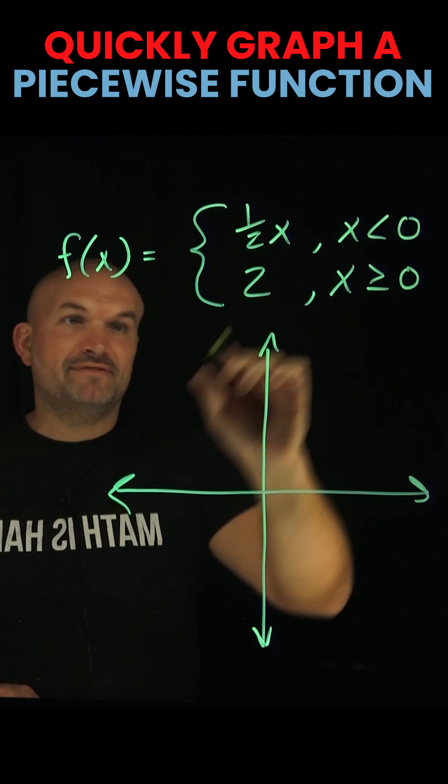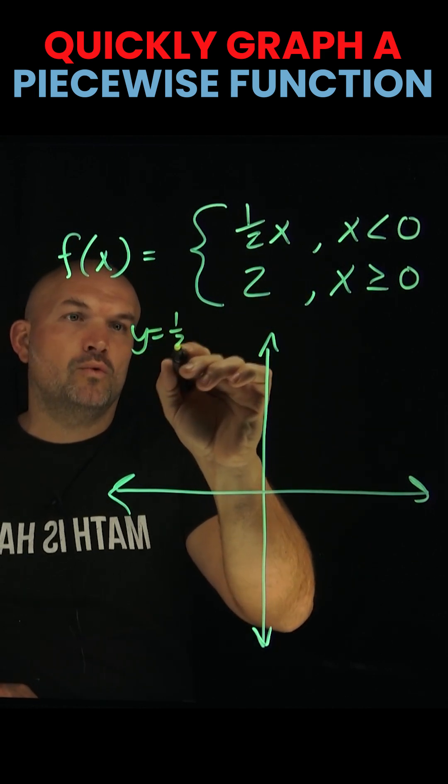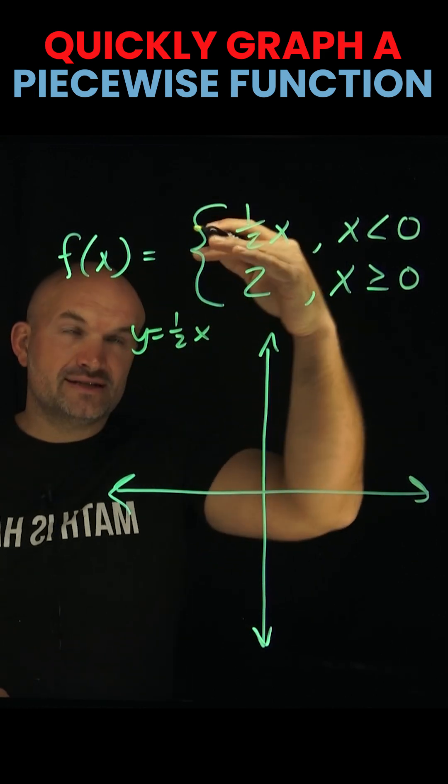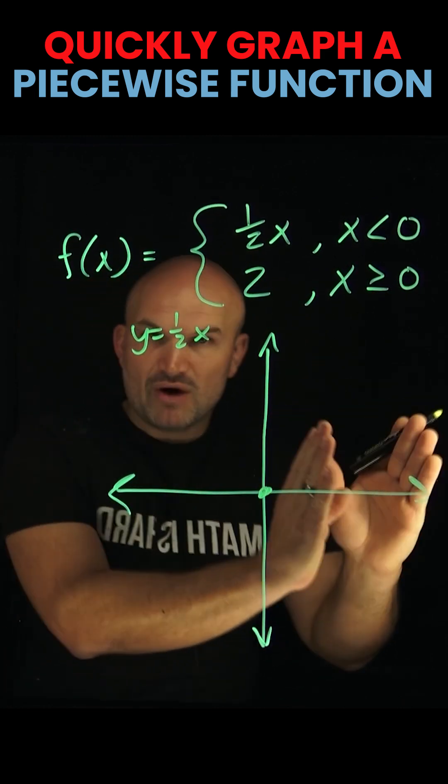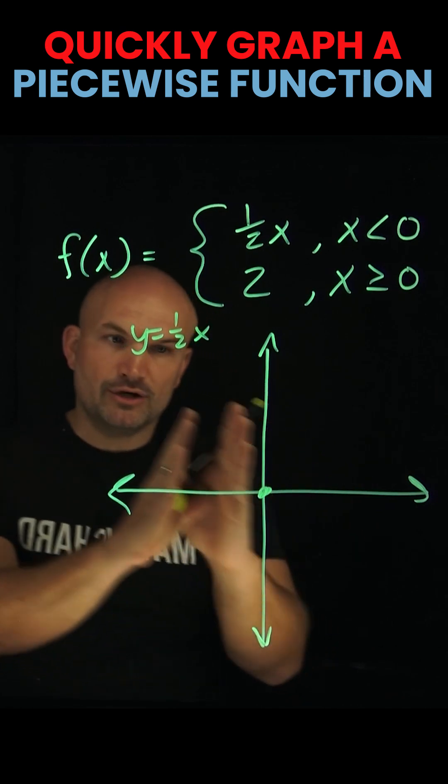So we need to graph the equation y = (1/2)x. We know in slope-intercept form that the y-intercept is zero. We're not going to go to the right because that would be positive x values. We want to go to the left.